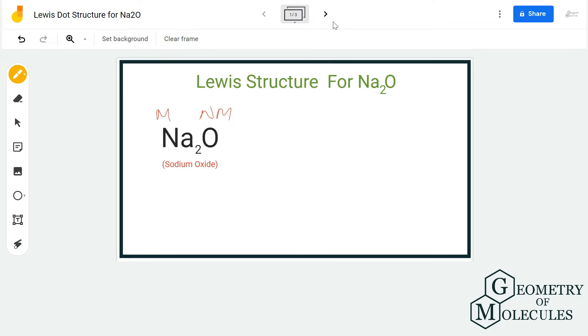Hence, the Lewis dot structure will be a bit different from the ones you have previously seen. So here, at first I'm going to draw the Lewis structure for Na and O, and then we'll move forward by drawing the Lewis structure for the complete molecule.